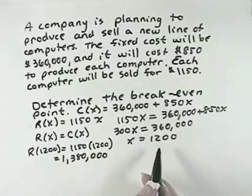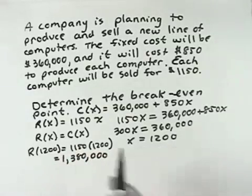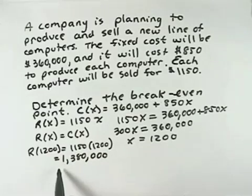What that means is that when 1,200 computers are produced and sold, both the cost and the revenue will balance or be equal at $1,380,000.